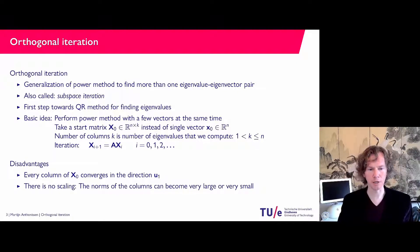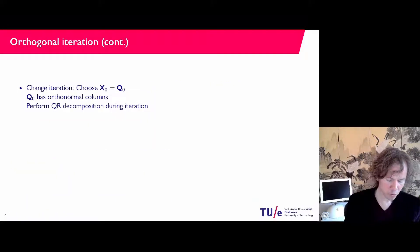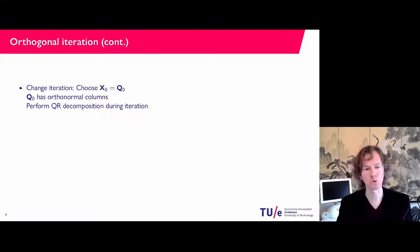Also there is no scaling in here which means that the columns can become very large or very small. We have seen for the standard power method we would be dividing by the length of the vectors in between to prevent very big, very small numbers. So let's make it smarter. I'm going to start with a matrix Q_0 that has orthonormal columns. So that means that I already have some scaling in there because all the columns have length one, and I also have different directions because the columns are orthogonal.